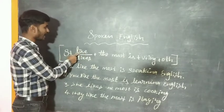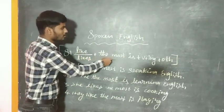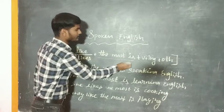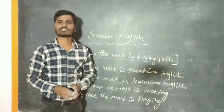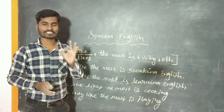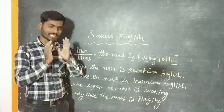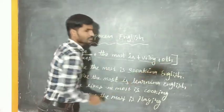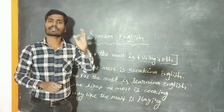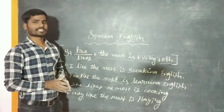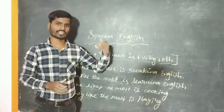The structure is: subject plus like or likes according to the subject, plus the most is, plus verb plus -ing, plus other words. For example: I like the most is — then play plus -ing gives playing. So the full structure is: subject + like/likes + the most is + verb-ing + other words.